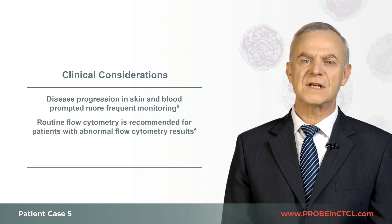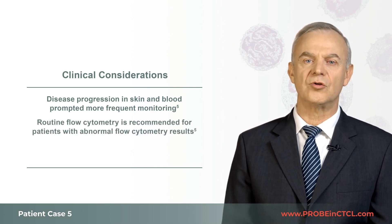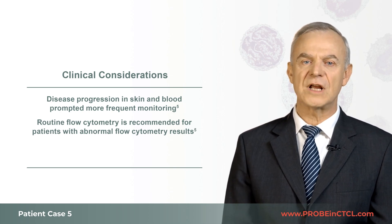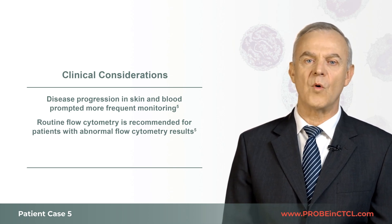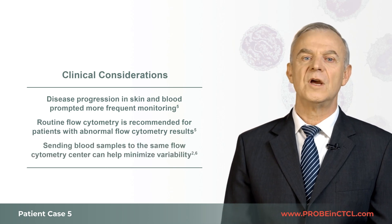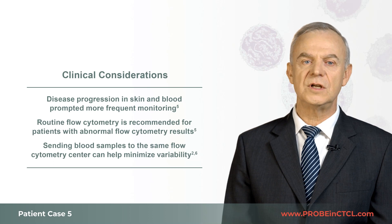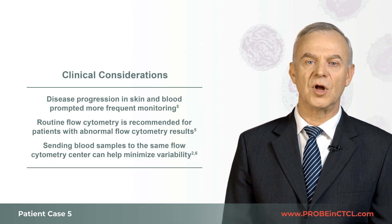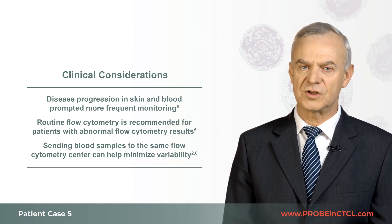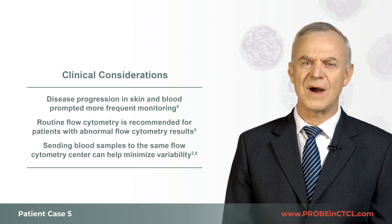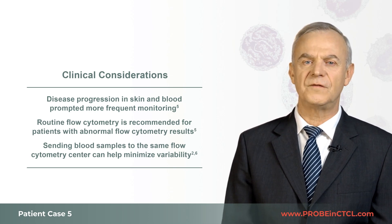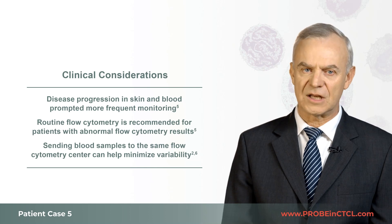This disease acceleration would warrant closer follow-up, and I would increase the frequency of flow cytometry from once a year to once every three to six months. For consistency, I would continue to send the blood samples to the same flow cytometry lab that performed the previous analysis, in order to minimize potential variability due to different methodologies across centers.